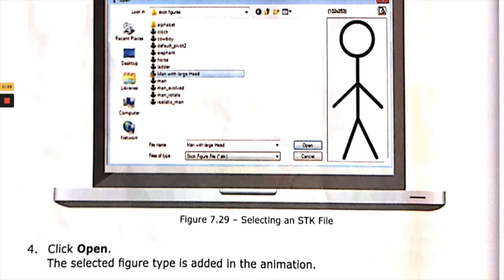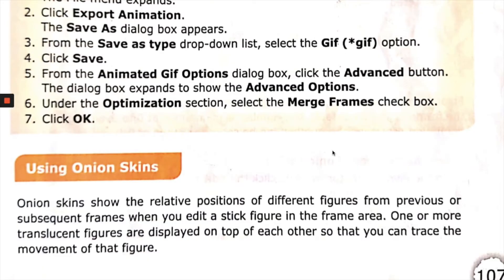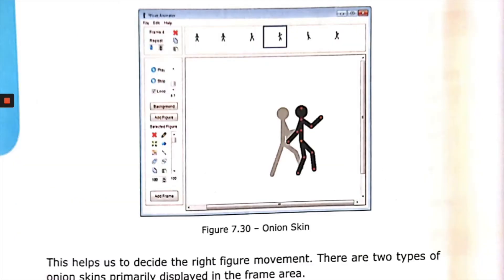Click Open and the selected figure type is added to the animation. Next is using onion skins. Onion skins show the relative positions of different figures from previous or subsequent frames. When you edit a stick figure in the frame area, it shows how the figure looked in the previous frame as a shadow — this shadow is called the onion skin. One or more translucent figures are displayed on top of each other so you can trace the movement of the figure, as shown in figure 7.30.